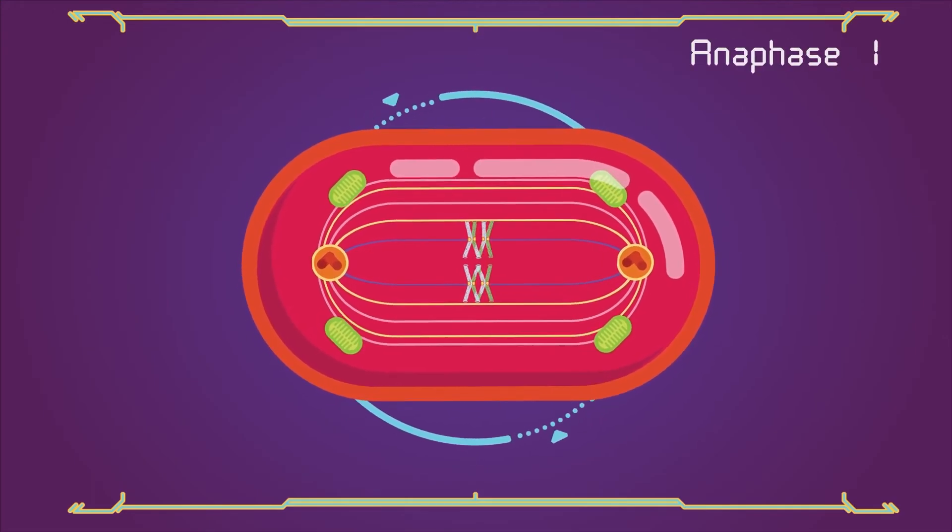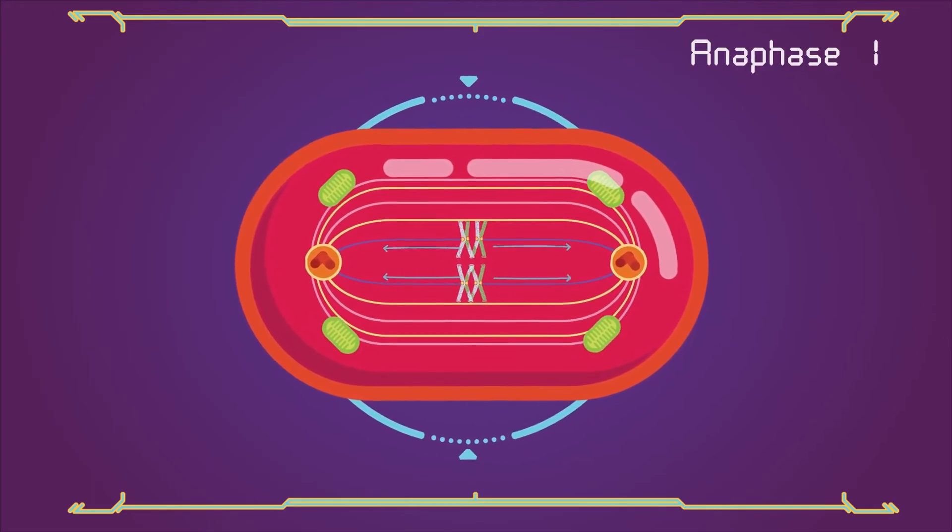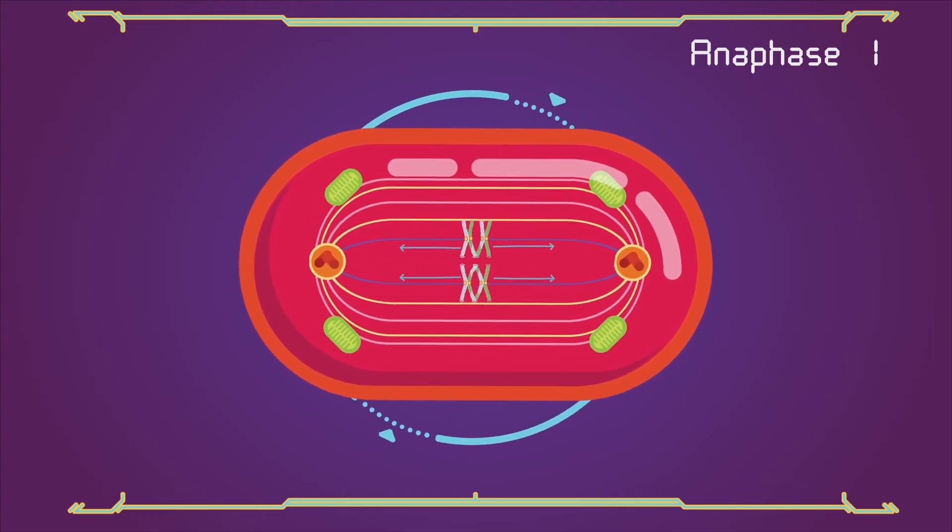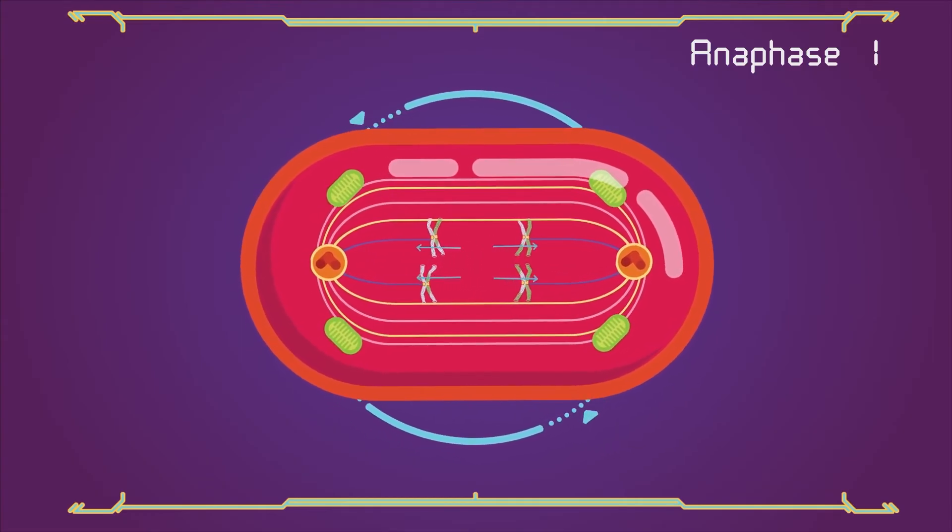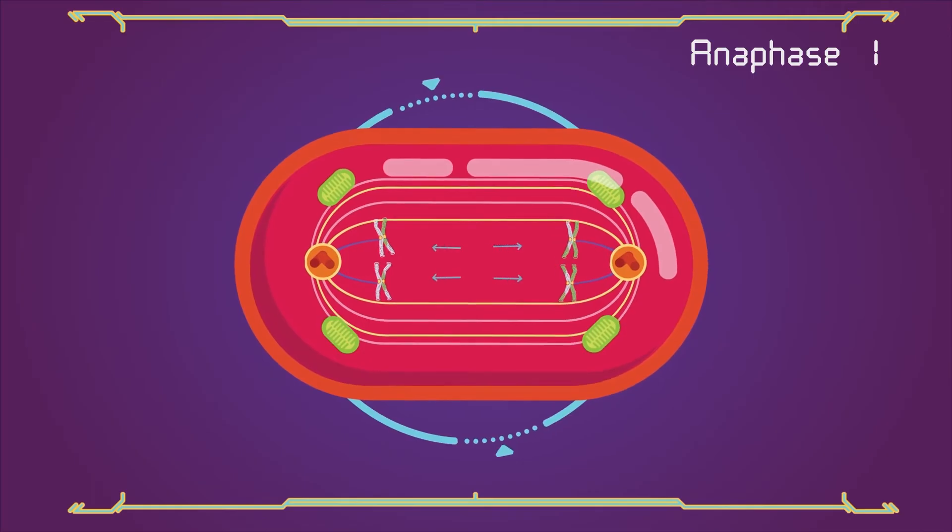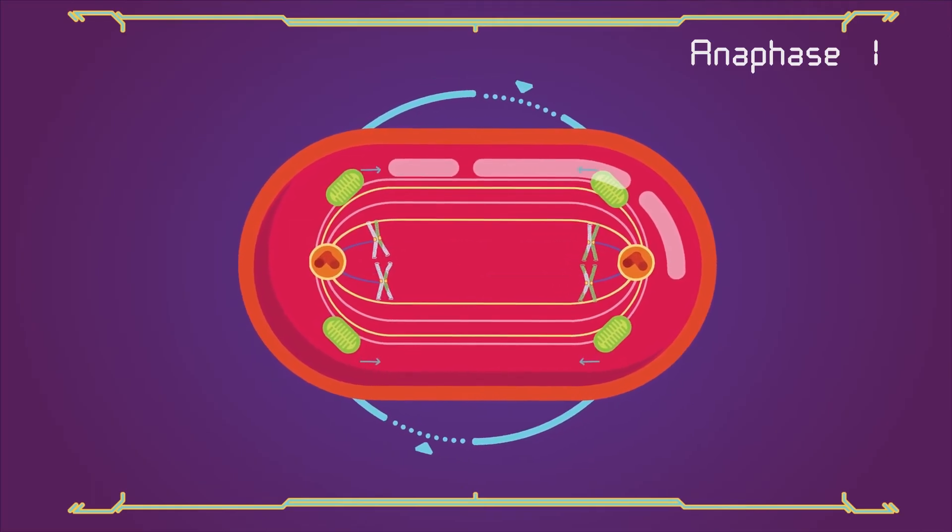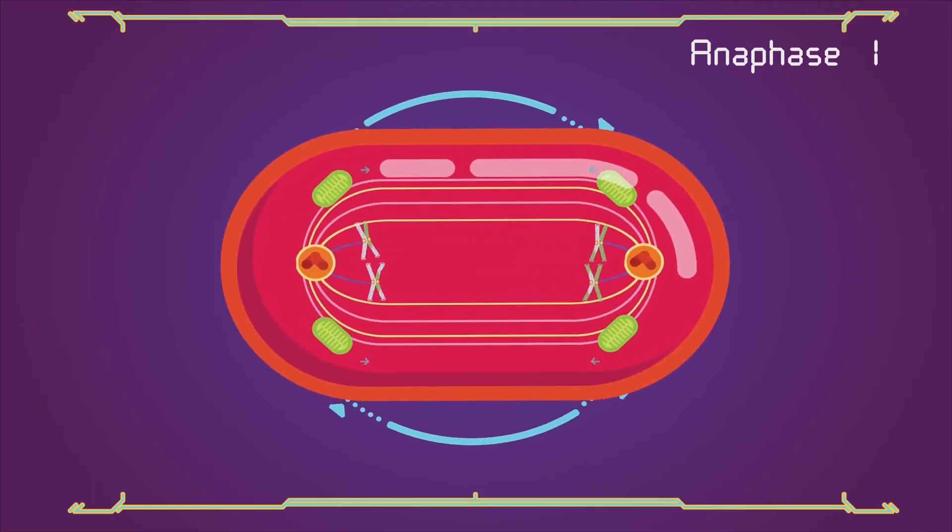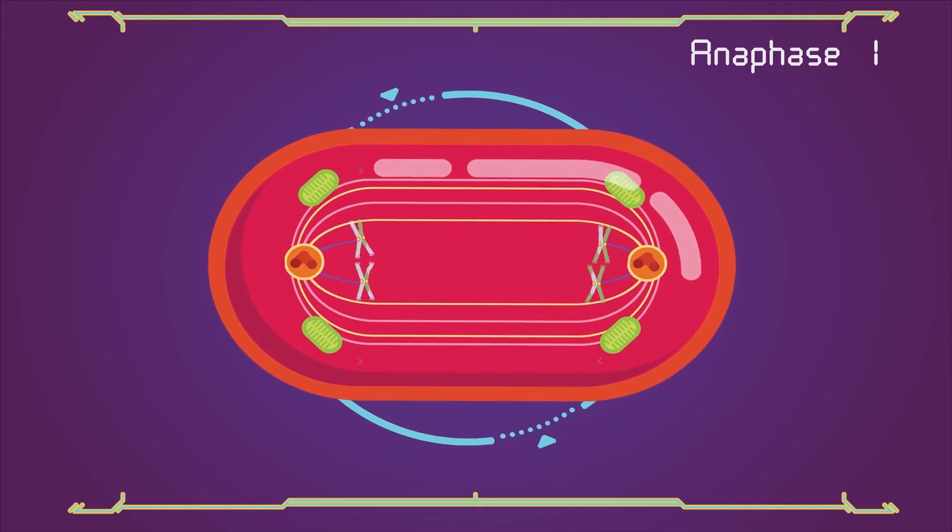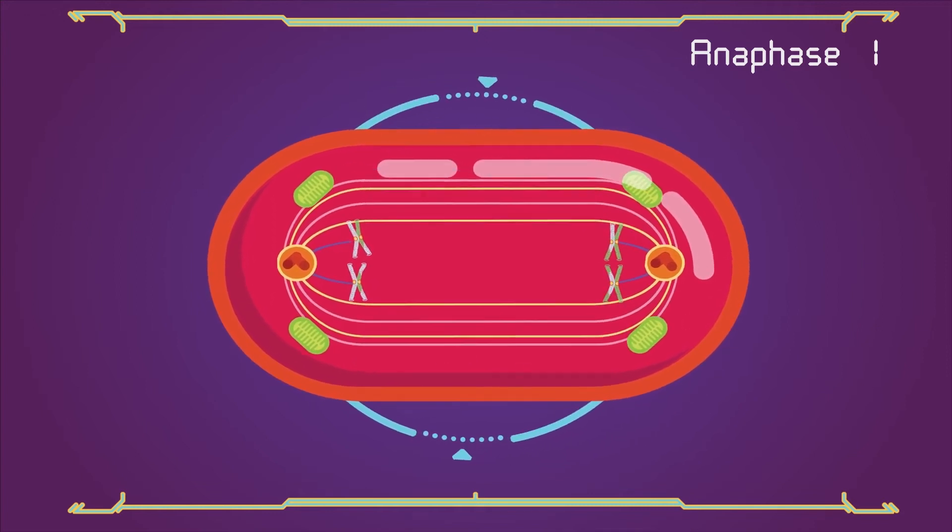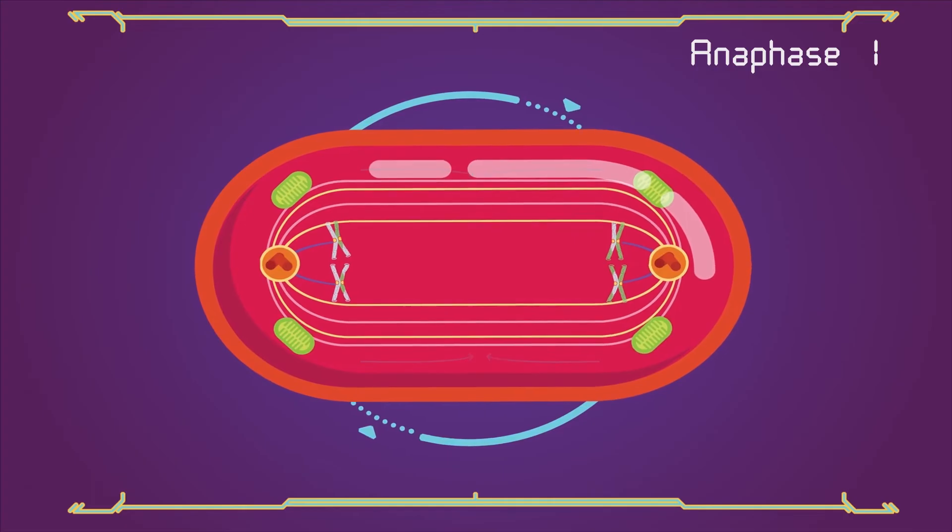Anaphase 1. Kinetochore microtubules shorten, pulling homologous chromosomes, which consist of a pair of sister chromatids, to opposite poles. Non-kinetochore microtubules lengthen, pushing the centrosome further apart. The cell elongates in preparation for division down the centre.